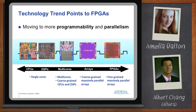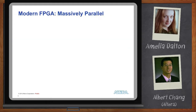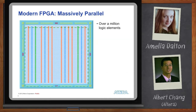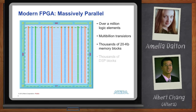If you take a look at a modern FPGA, they're actually massively parallel. A modern FPGA has over a million logic elements, billions of transistors, thousands of memory blocks, DSP blocks, and hundreds of IOs including high-speed transceivers — all available for hardware acceleration.